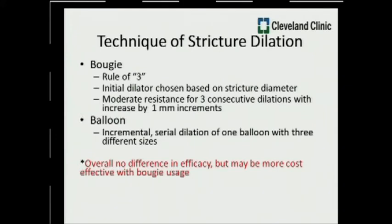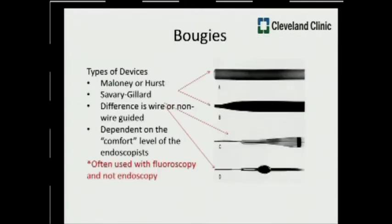For dilation techniques, comparing bougie to balloon: in bougie dilation, there is always the rule of three — you start with an initial dilator based on the stricture diameter, then do three consecutive dilations with incremental increases of one millimeter. For balloon dilations, most balloons such as CRE balloons have stepwise increases in size. Looking at the literature, both techniques show no significant difference in efficacy, but there may be some cost-effectiveness advantage to bougie over balloon techniques.